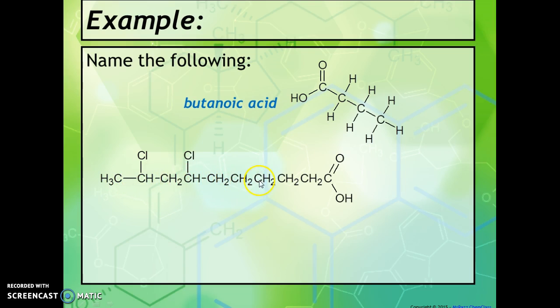So let's figure out how long it is. One, two, three, four, five, six, seven, eight, nine, ten carbons long. So it's decane. But we see the carboxylic acid on the end, so we know we need to change our ending to 'oic', giving us decanoic acid.